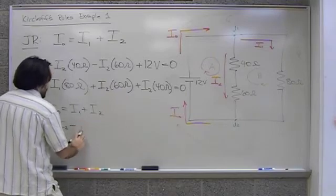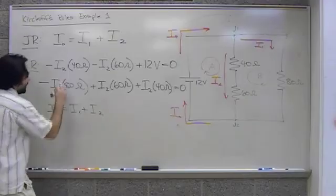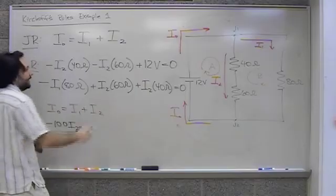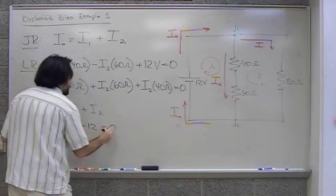The loop rule as applied to loop A gives us negative 40 I2. You know what, I'm going to combine those two terms and make it a little easier on me. Minus 60, minus 40, that gives me minus 100 I2 plus 12. Again, I'm setting aside the units. Zero.